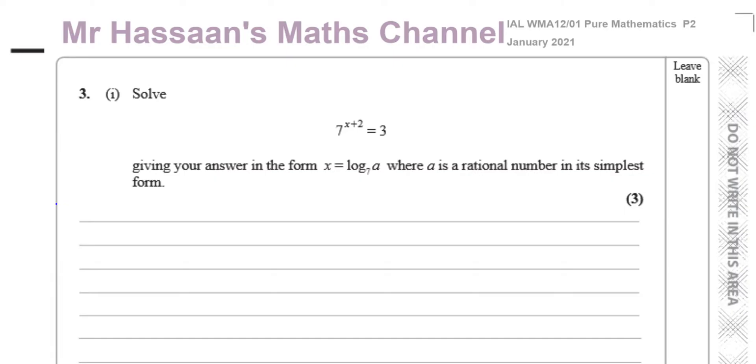And this question here is about logarithms. It says solve 7 to the power of x plus 2 equals 3, giving your answer in the form x equals log to the base 7a, where a is a rational number in its simplest form.